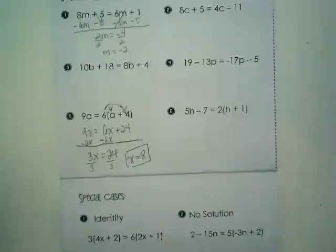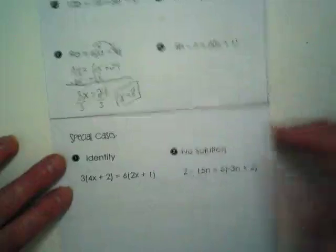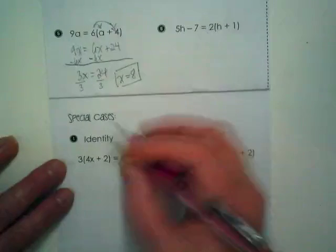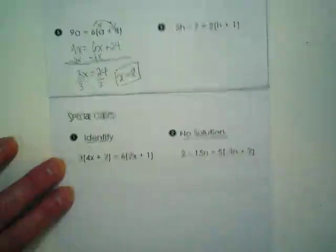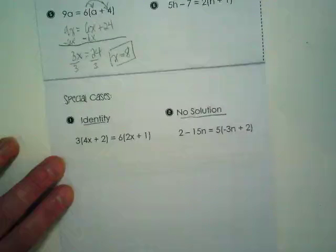So that's how we solve equations that have variables on both sides of the equal sign. We're just combining like terms and getting the variable on one side, the numbers on the other, and simplifying until we get down to what the variable is equal to. There are two kinds of special cases, though. There are what we call identity and what we call no solution. Sound familiar?